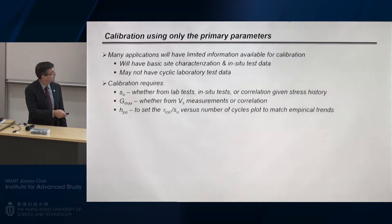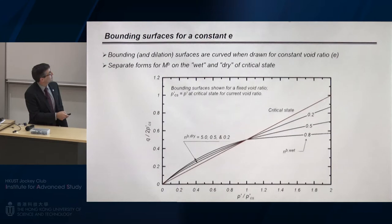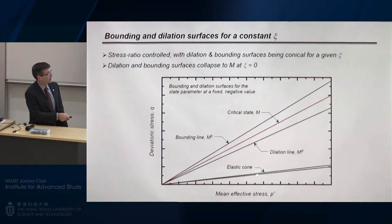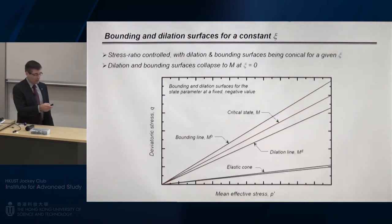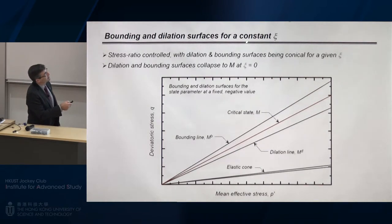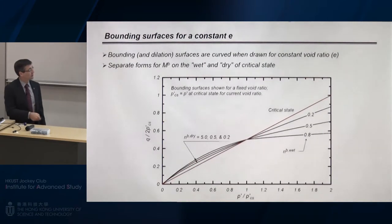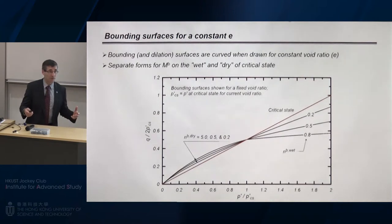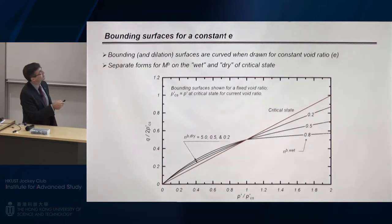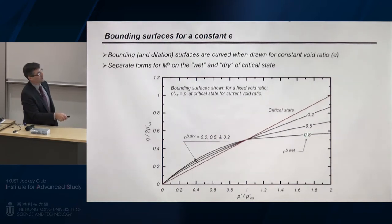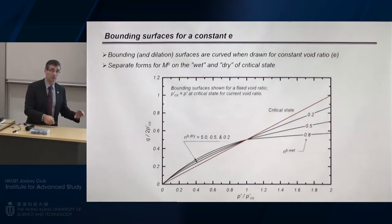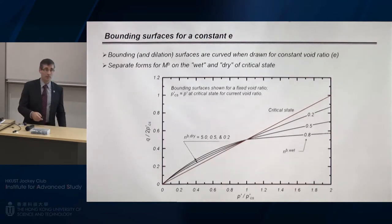The model has a critical state line, a dilation line, and a bounding surface line. The bounding and dilation lines are functions of state parameter. As you shear and the state parameter goes to zero at critical state, these surfaces collapse onto the critical state line, and you deform with no further changes in volume or stress — that's how critical state behavior is incorporated. There's also a small elastic core cone. For a constant void ratio under undrained loading, the bounding surface is curved through the critical state point. We changed the form of the equation to be different on the wet side of critical from the dry side, giving two different parameters to control peak strength relative to critical state.